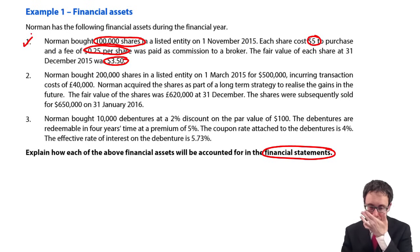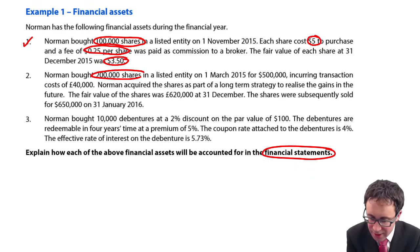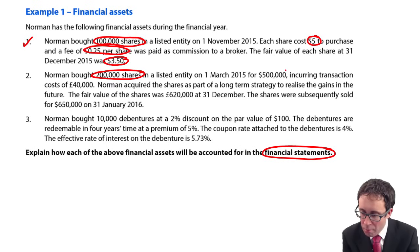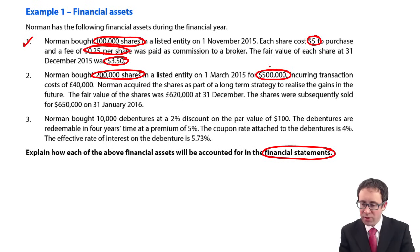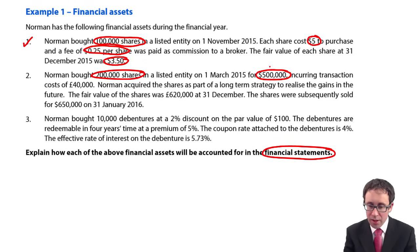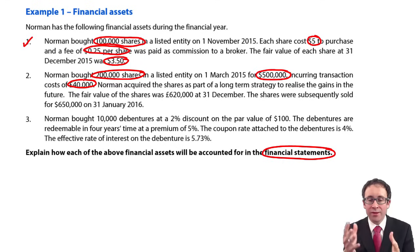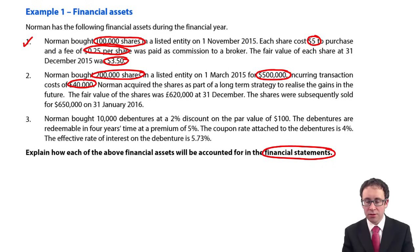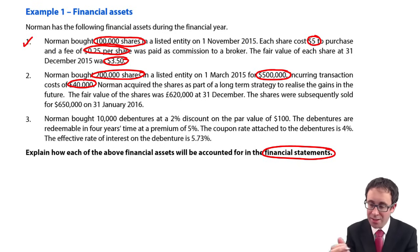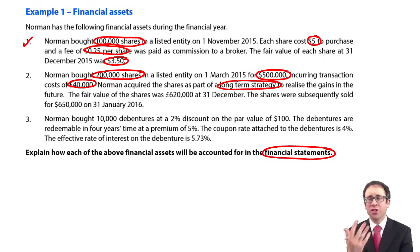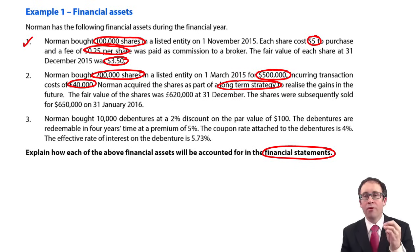For scenario two, Norman bought 200,000 shares in a listed entity — good for a fair value. We're told it cost $500,000, and the transaction costs are $40,000. Norman acquired the shares as part of a long-term strategy to realise the gains in the future. So we have strategic intent to hold that financial asset, which means it is classified as fair value through other comprehensive income — an equity investment.